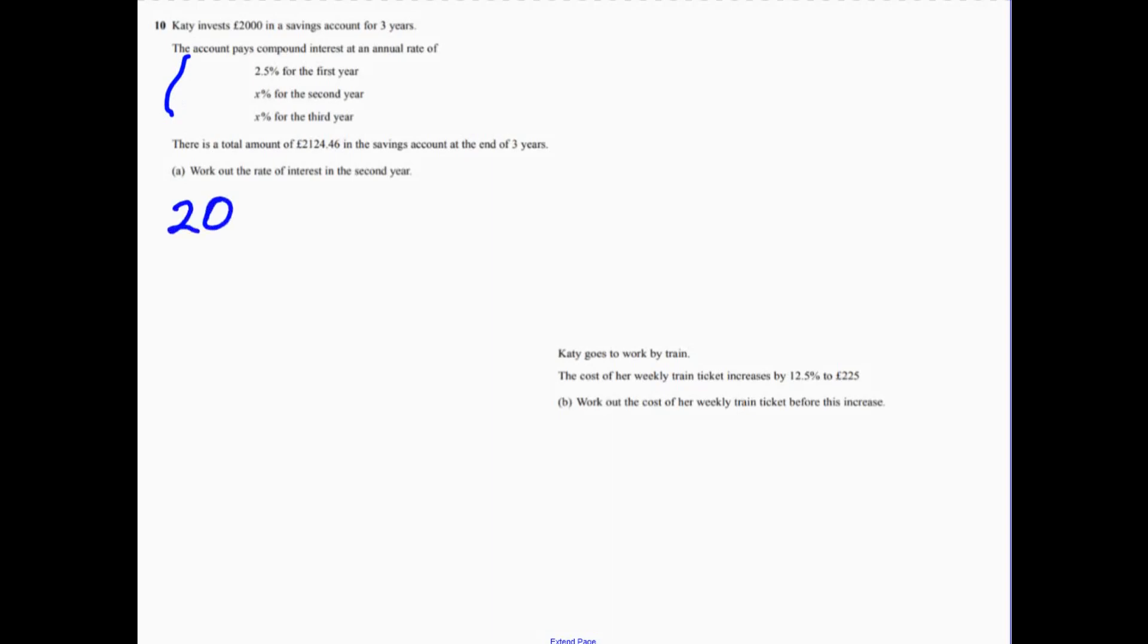what's actually happened is we get 2,000 multiplied by... Now, to increase by 2.5%, multiplied by 1.025. And if you do that, that equals 2,050.